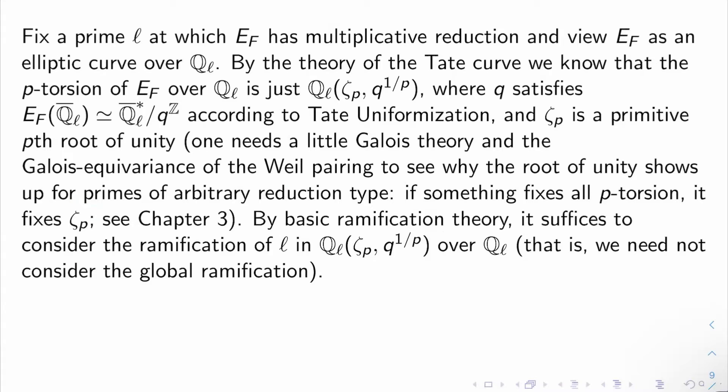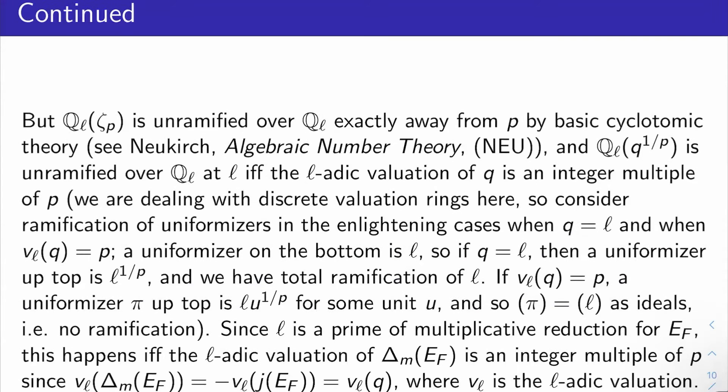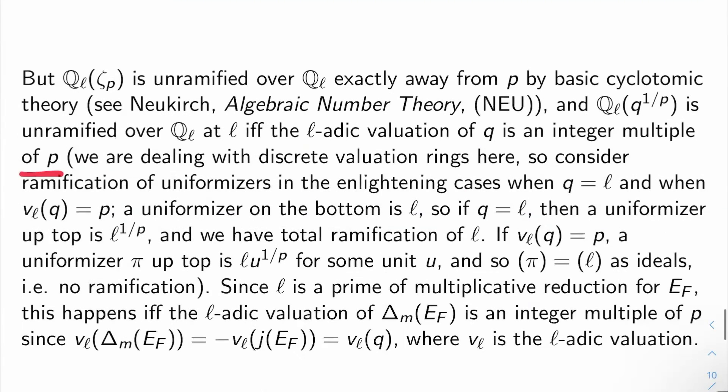By basic ramification theory, it suffices to consider the ramification of l in Q_l adjoined ζ_p, q^(1/p) over Q_l. That is, I can look locally to determine ramification. I don't have to look globally, like I can put l's here, basically. So now you can just use some standard results. Q_l adjoined ζ_p is unramified over Q_l exactly away from p by basic cyclotomic theory. Neukirch covers this, for example. And Q_l adjoined q^(1/p) is unramified over Q_l at l, if and only if the l-adic valuation of q is an integer multiple of p. I'll say a little bit about why this is true.